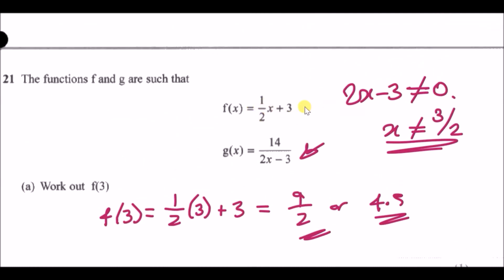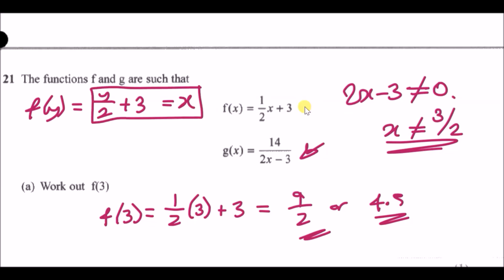To calculate an inverse, a nice trick is to replace the variable with y. So we have f(y) = y/2 + 3. The inverse property: set it equal to x and rearrange to make y the subject. This is easy — simply minus 3 and then multiply by 2 across, giving y = (x minus 3) times 2.